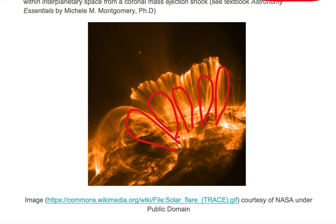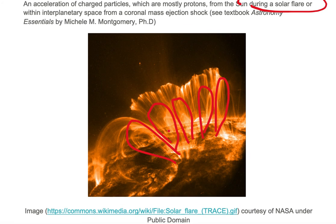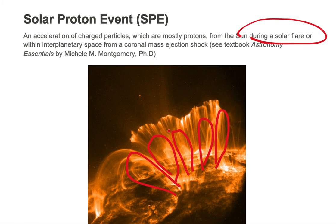Protons travel slower than electrons, and electrons are mostly accelerated in a solar flare event. So these post-solar flare loops could be associated with these protons that are moving slower than electrons and thus a SPE event.